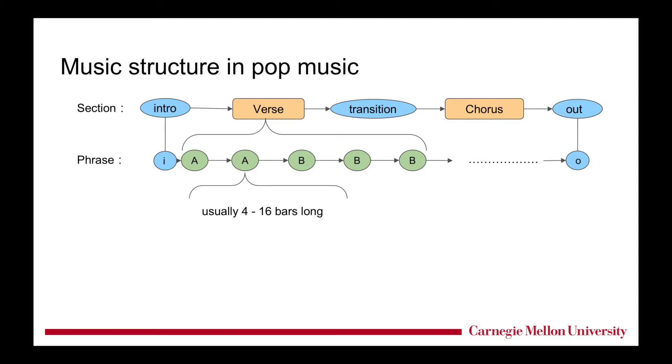And each phrase usually contains 4 to 16 bars. And by combining those phrases, we can have bigger sections that form the whole song. For example, in this song, there is an intro, a verse, a transition followed by a chorus, and the outro section. Very typical pop song structure.